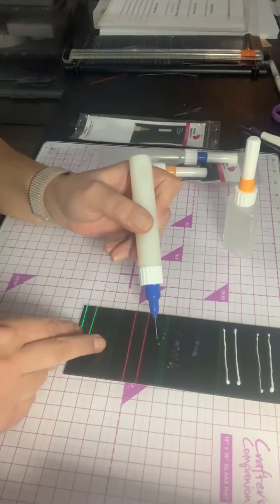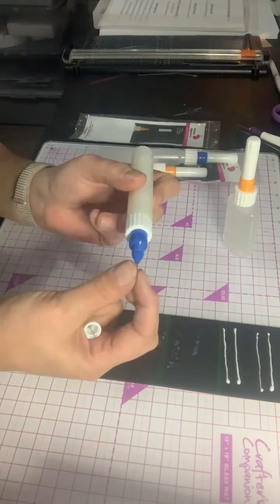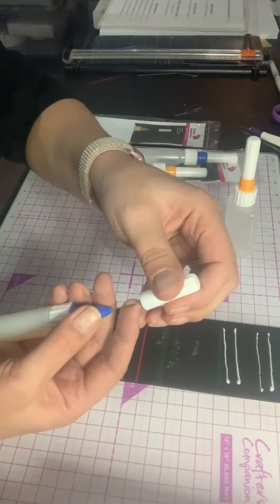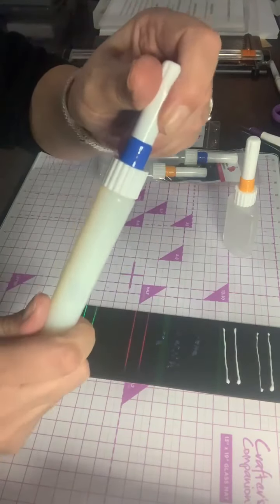And again, you'd use the end to move the glossy accents around, always just wipe the tip with your fingers or a tissue and then pop that needle back in. So that's the glossy accents one.